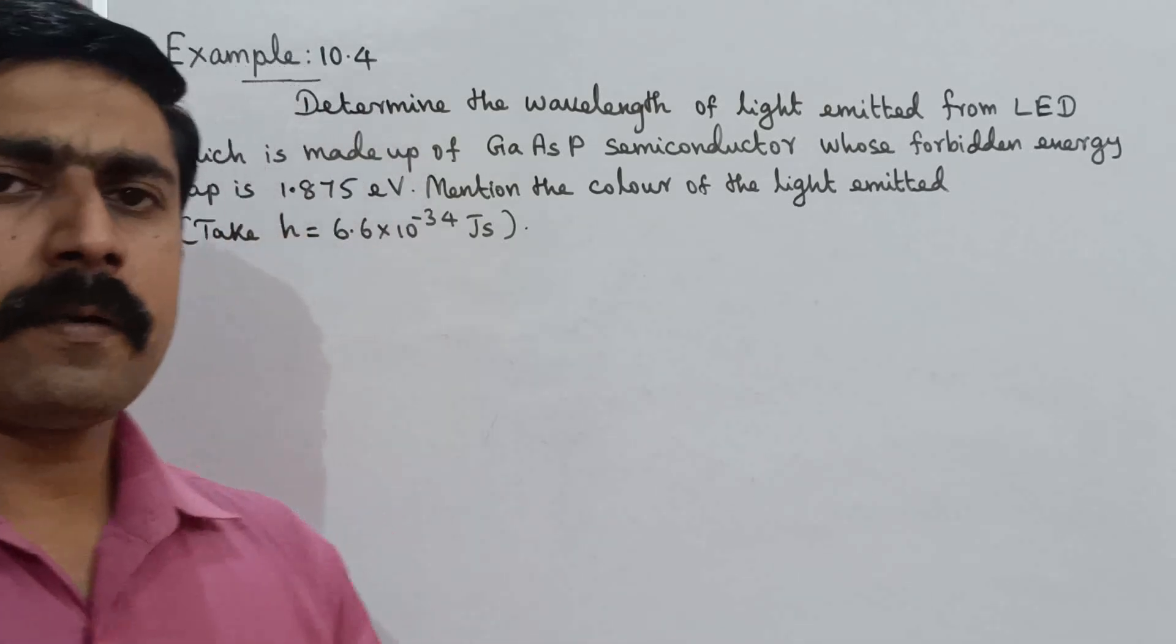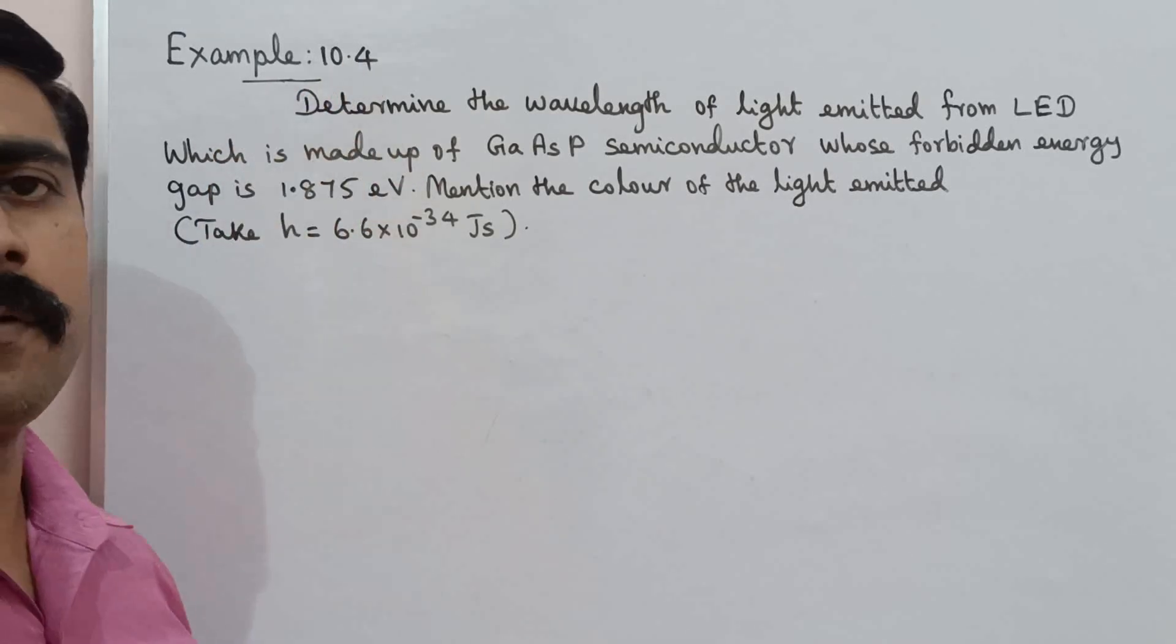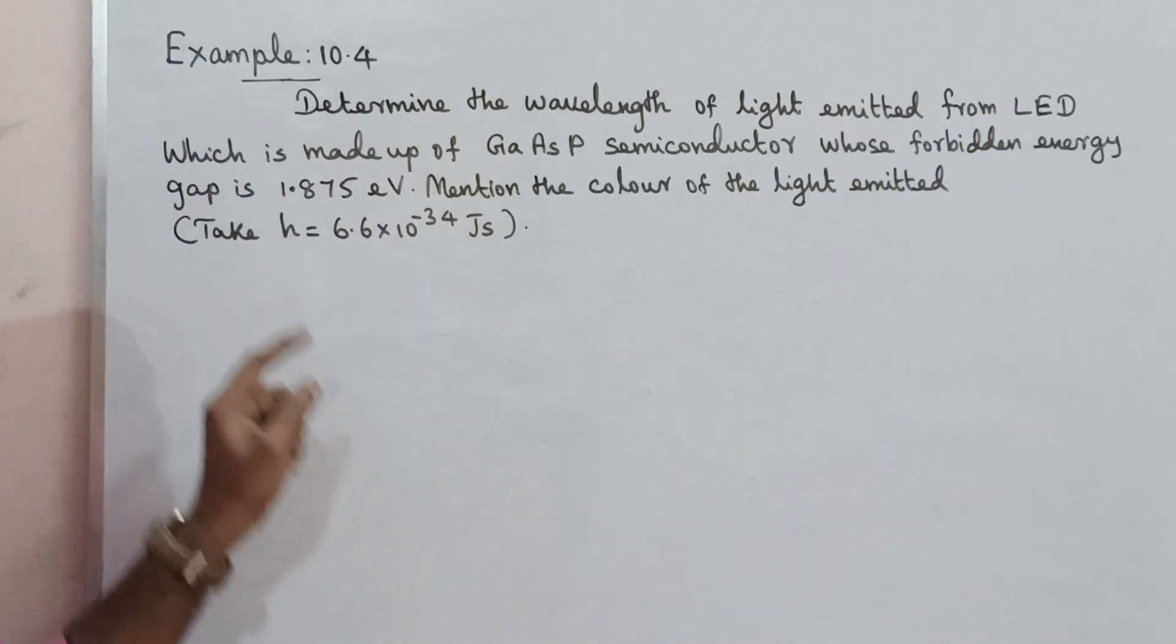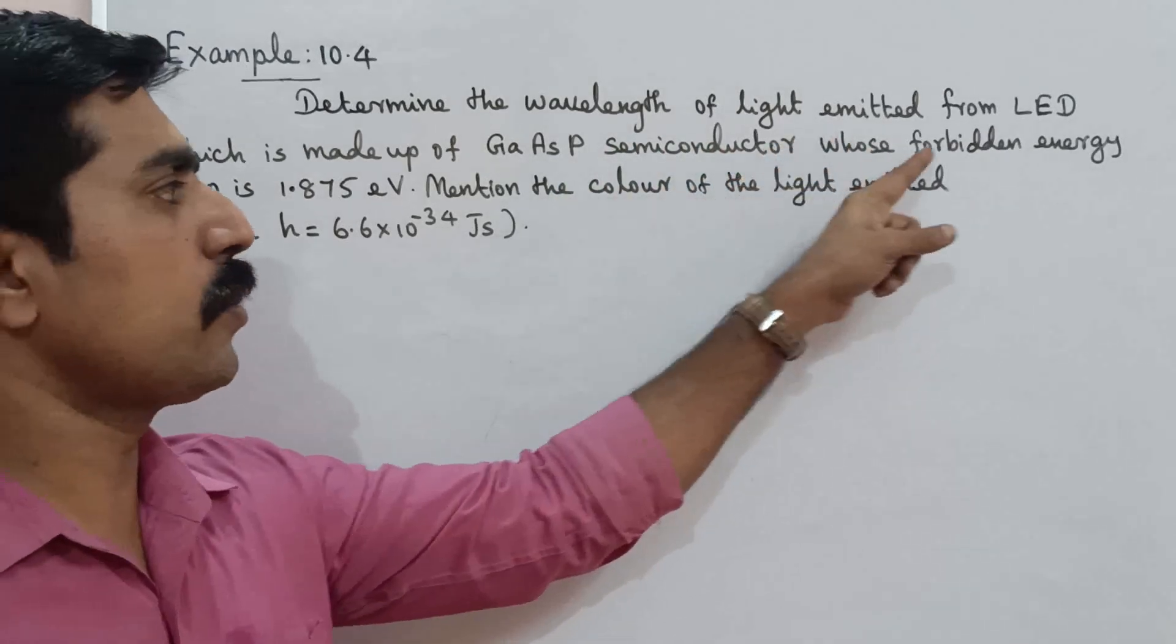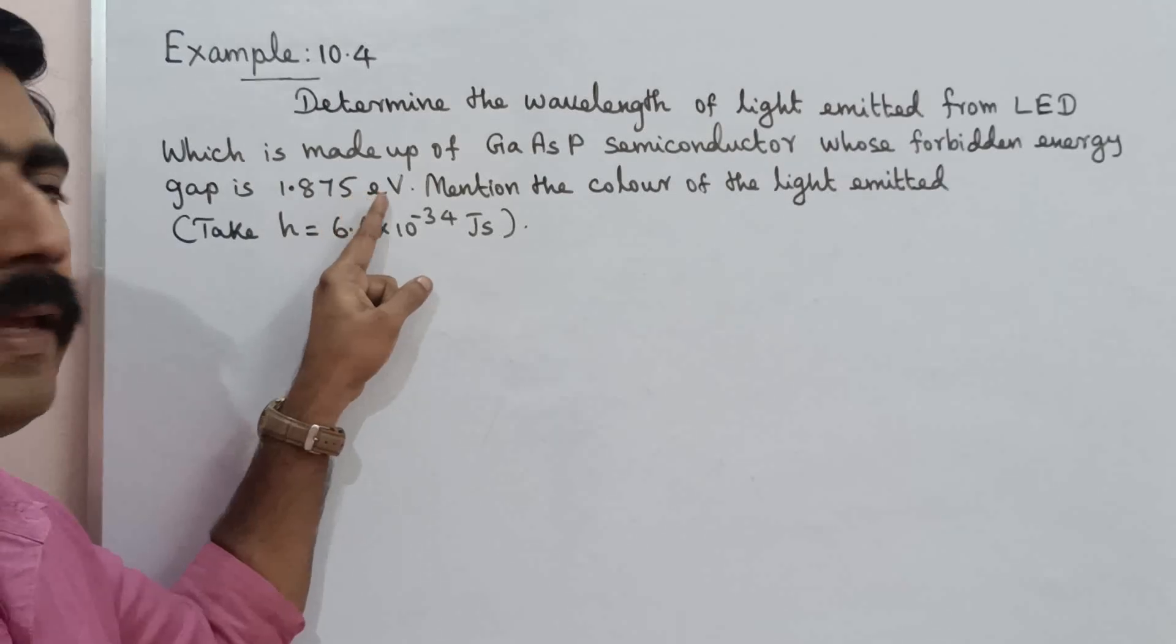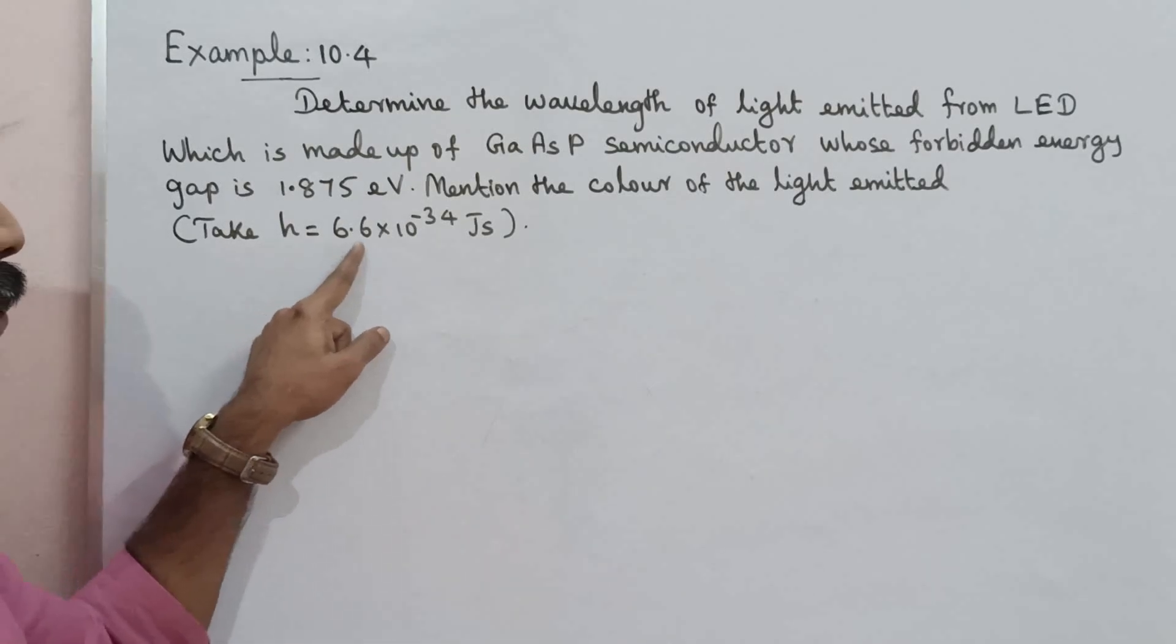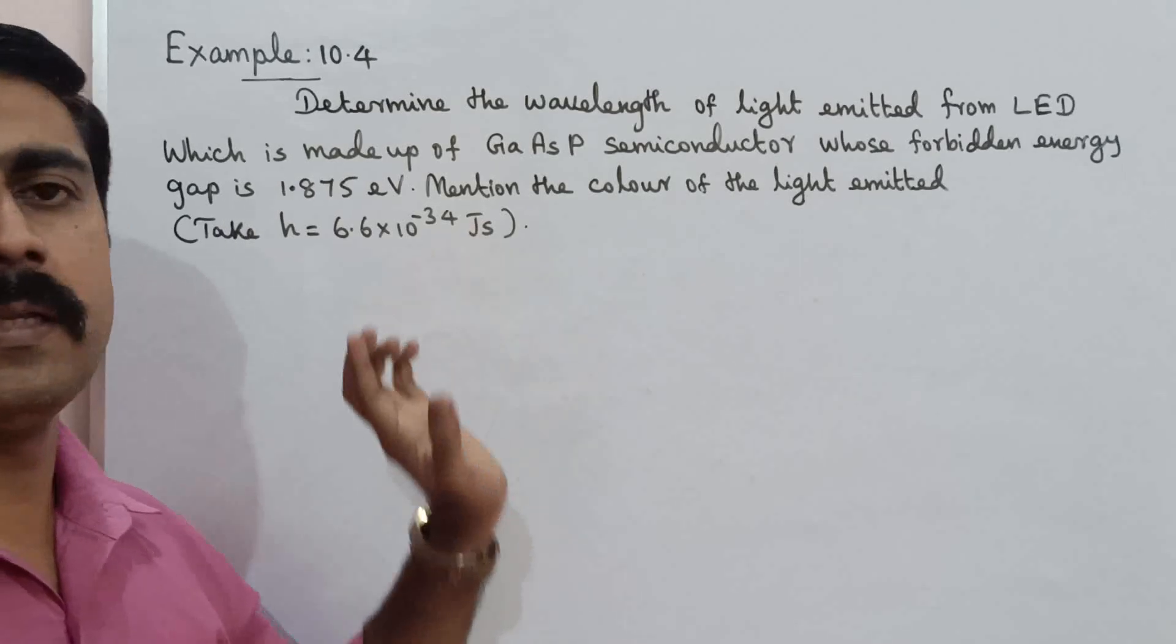Hi students, now we have a problem, Example 10.4: Determine the wavelength of light emitted from an LED which is made up of gallium arsenide phosphate semiconductor whose forbidden energy gap is 1.875 electron volts. Mention the color of the light emitted. Take h equals 6.6 into 10 power minus 34 joule second.